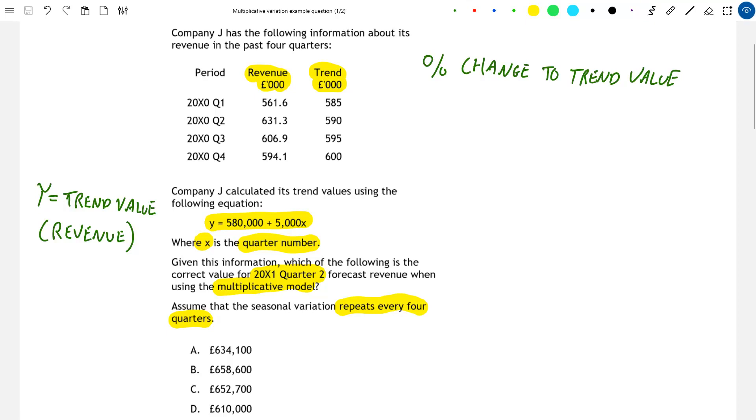So for this question we're going to be focusing on 20x1 quarter 2. The question has told us that seasonal variation repeats every four quarters. Repeating every four quarters just means repeating every year. So the seasonal variation in 20x0 quarter 2 will be the same as the variation that occurs exactly one year later. So let's look at our figures for 20x0 quarter 2 and see the percentage change that needs to occur to the trend value in that period to make it equal to the actual revenue.